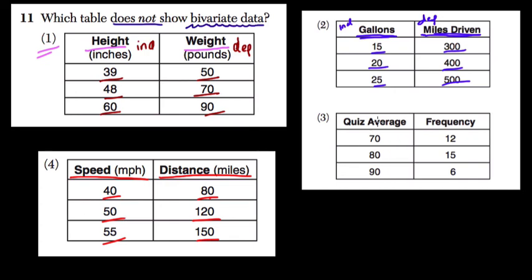the more distance you can actually cover. The only one here that's not bivariate is this table, table 3. This is a univariate table because, on the one hand, we're looking at quiz averages. That's one type of variable. On the other, we're looking at frequency.